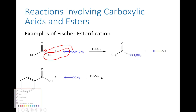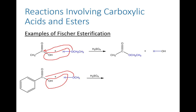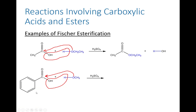For the next reaction, benzoic acid is combined with methanol. Again, we remove the hydrogen and the OH group to form water, and the remaining oxygen attaches to the carbon. We have an ester with OCH₃ on it, plus water. To name the ester: the alkyl group is a methyl group, and this came from benzoic acid — so the product is methyl benzoate.